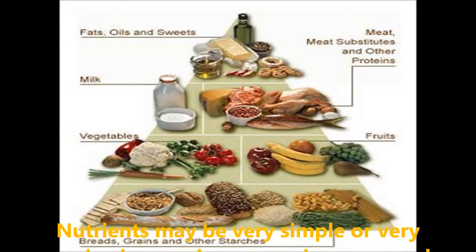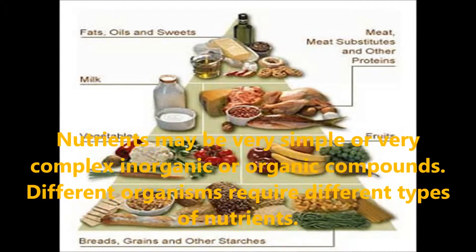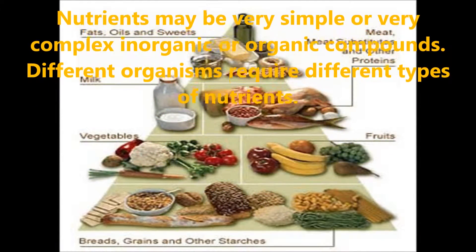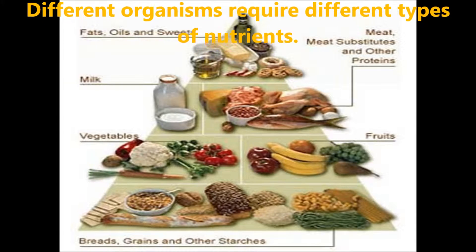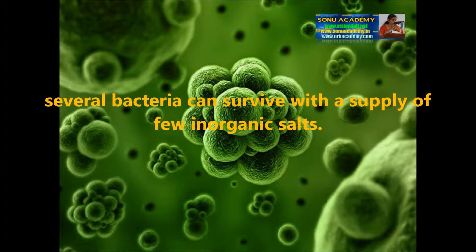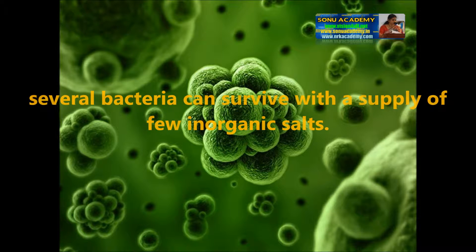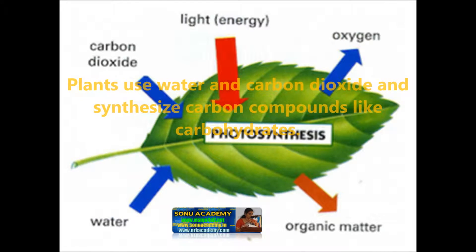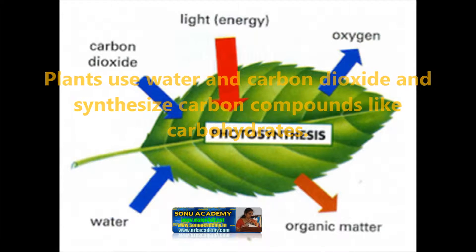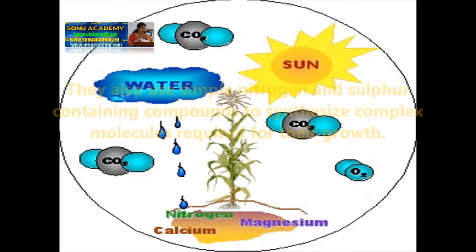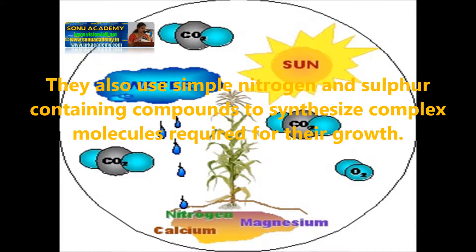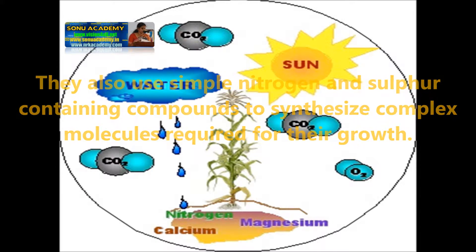Nutrients may be very simple or very complex, inorganic or organic compounds. Different organisms require different types of nutrients. For example, several bacteria can survive with a supply of few inorganic salts. Some plants use water and carbon dioxide and synthesize carbon compounds like carbohydrates. They also use simple nitrogen and sulfur-containing compounds to synthesize complex molecules required for their growth.